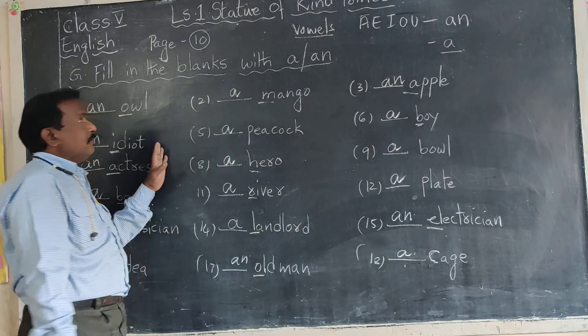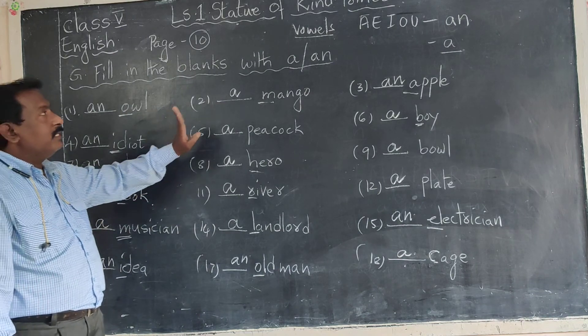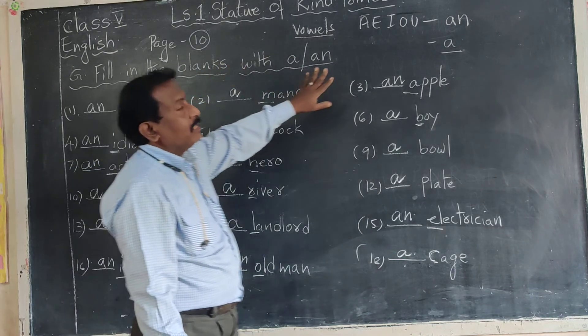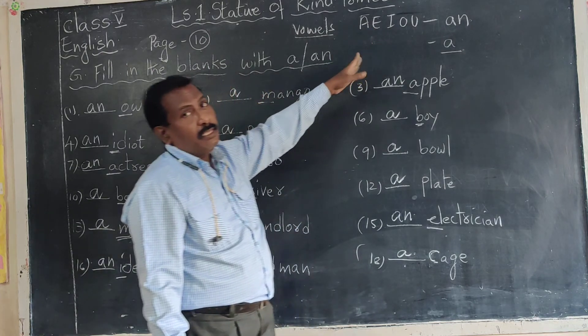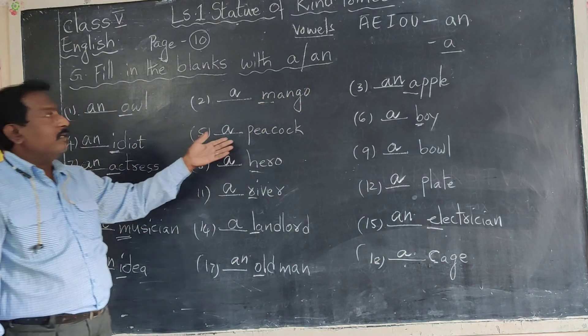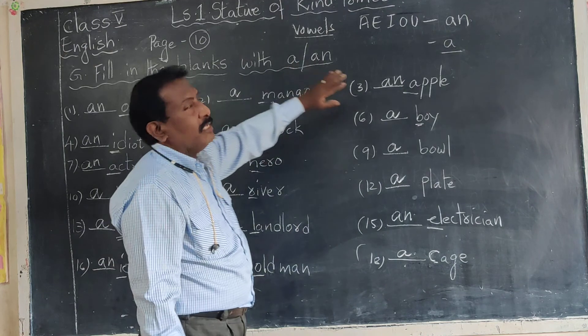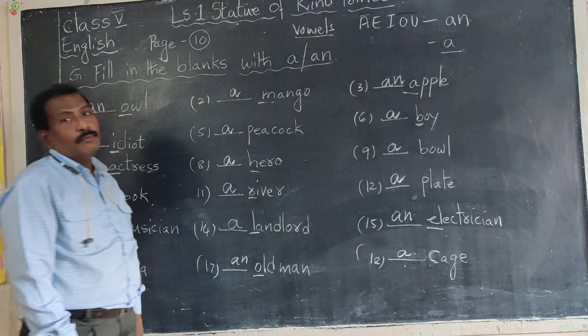This is about the usage of A and An. And remember that, what are vowels and what are consonants. We use An before words that start with A, E, I, O, U. And singular nouns starting with consonant, we use A. We can practice in your exercise. Thank you.